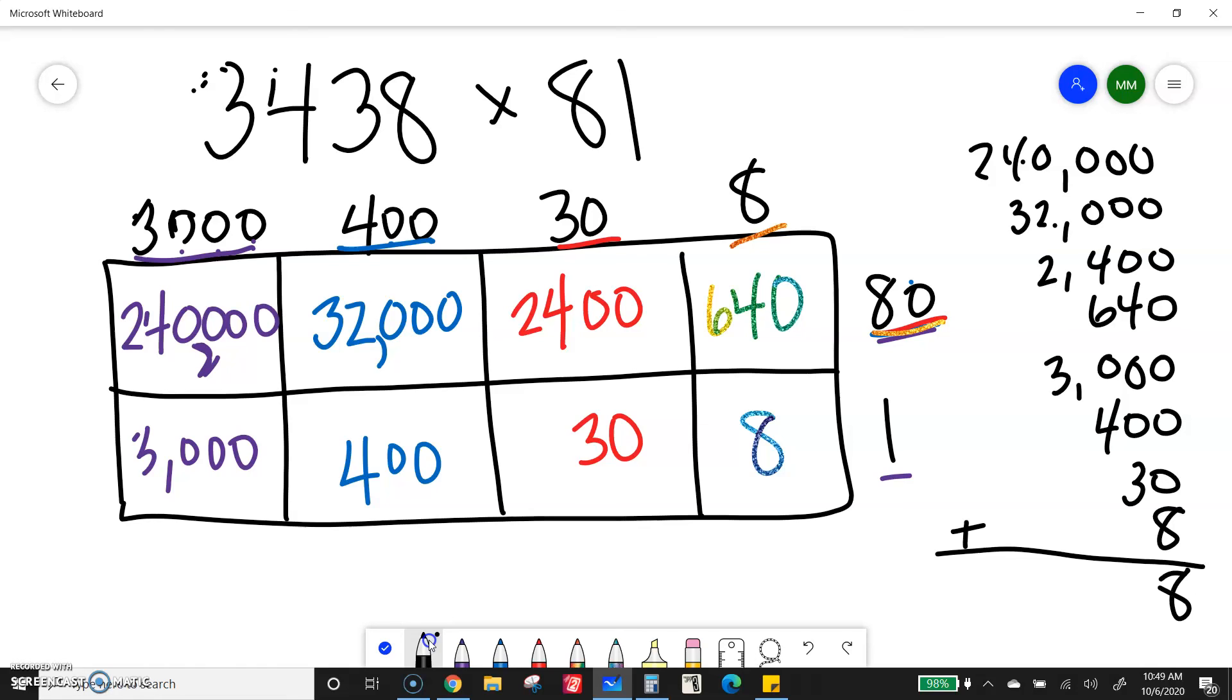So 0, 0, 0, 0, 0, 0, 0, 8. 0, 0, 4 plus 3 is 7. 4 plus 6 is 10. Plus 4 is 14. 1 plus 2 is 3. 4, 5, 6, 7, 8.